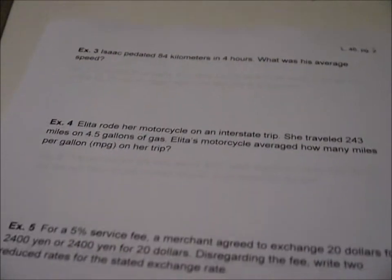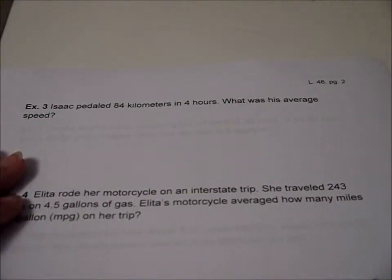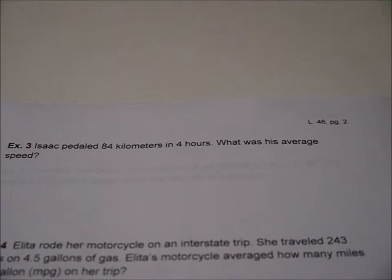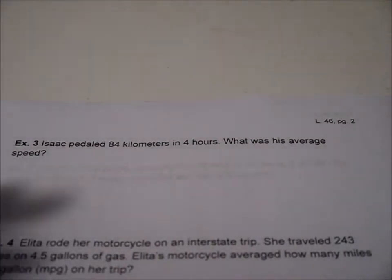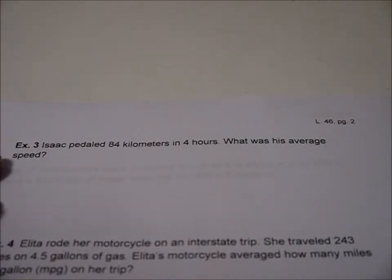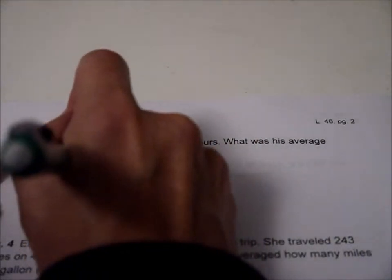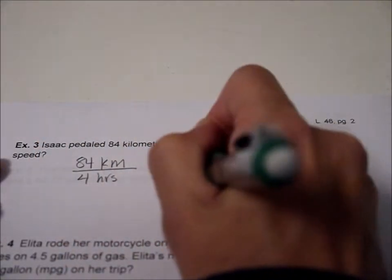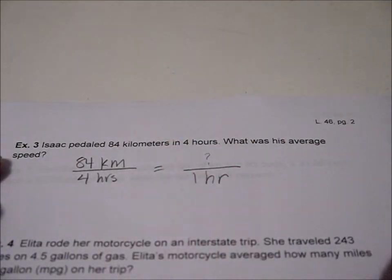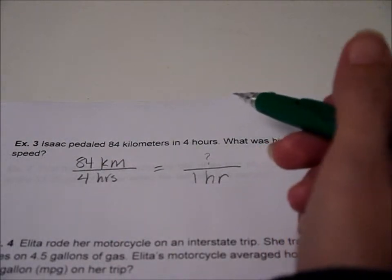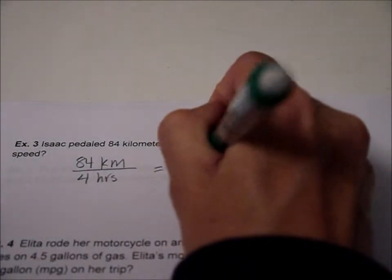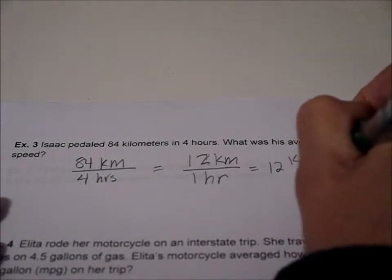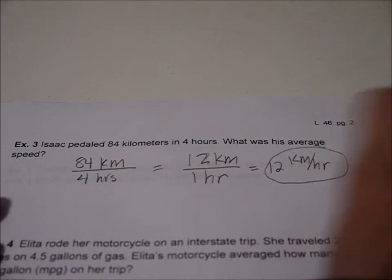Now we're going to talk about rates, where we've got something like Isaac pedaled 84 kilometers in four hours. What was his average speed? So that is where we take speed is a ratio of distance to time. So he went 84 kilometers in four hours, and we just divide. 84 divided by four is 12. And that means 12 kilometers per one hour. That's his average speed, 12 kilometers per hour.